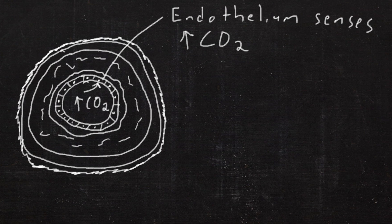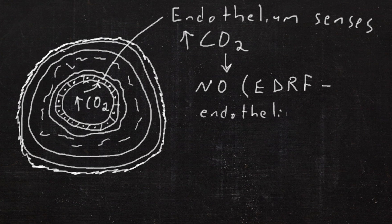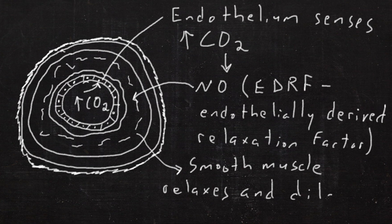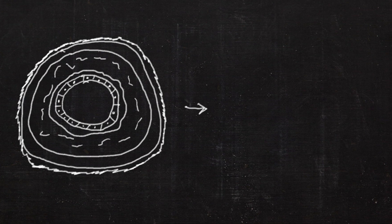CO2 levels are detected by the endothelium, and that causes it to release nitric oxide, which causes the smooth muscle layer to relax and dilate.